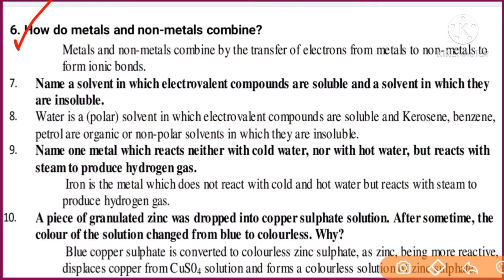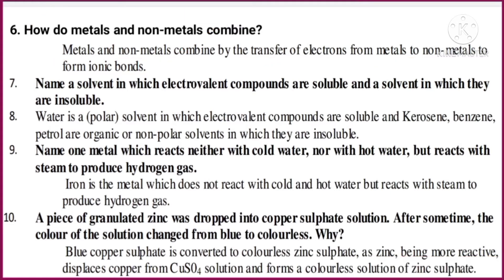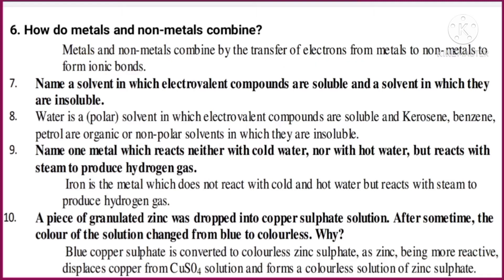Question number six: How do metals and non-metals combine? Metals and non-metals combine by the transfer of electrons from the metal to the non-metal, which forms an ionic bond. The metal and non-metal gain and transfer electrons from their outermost shells to form compounds — this is called an ionic or electrovalent bond.